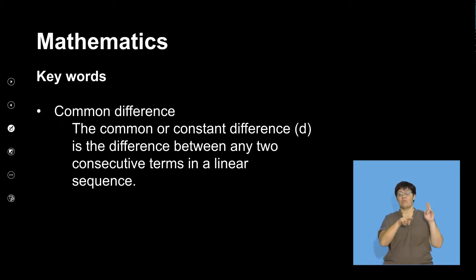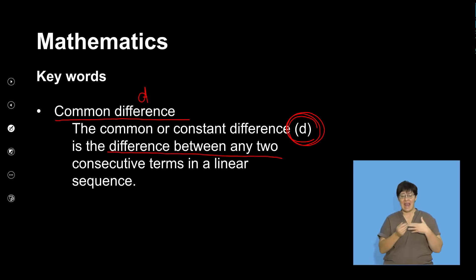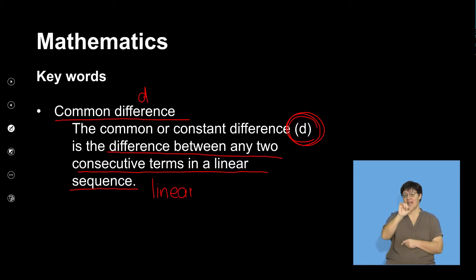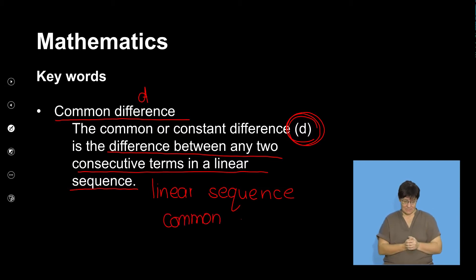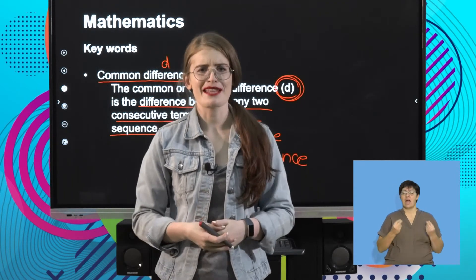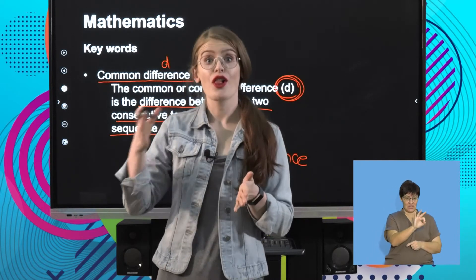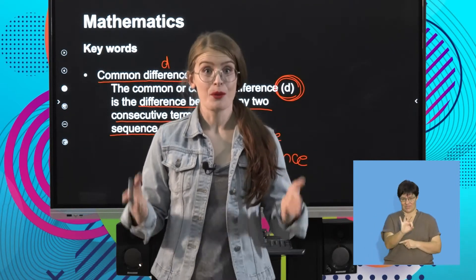The next thing I'm going to revise is the common or constant difference, and we denote it with a D. The common difference is the difference between any two consecutive terms in a linear sequence. Please remember that a linear sequence has the property of a common difference. For example, if I had a pattern going 3, 6, 9, 12, each time I am adding 3, so my common difference is 3.